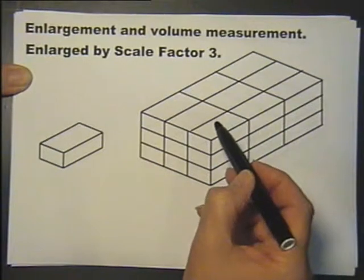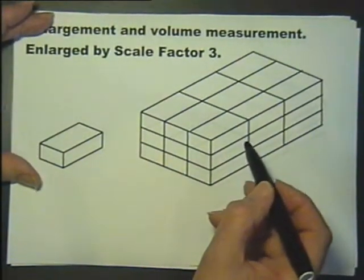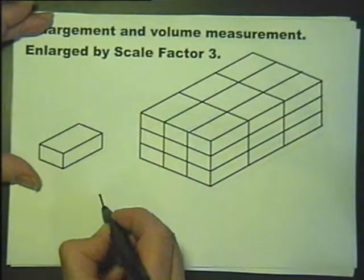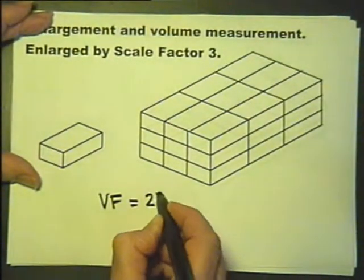Well in each layer there's 9, so all together there's 3 nines, there's 27 blocks in there, so we can say that the volume factor is in fact 3 nines, 27 times as much.